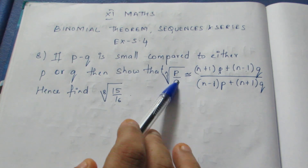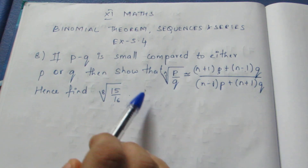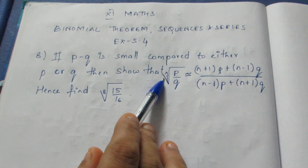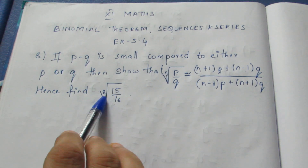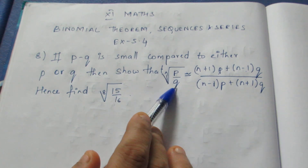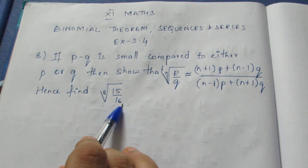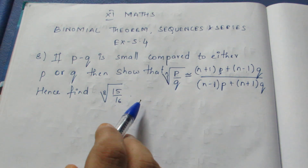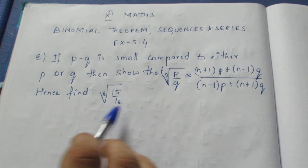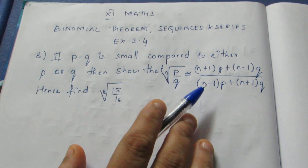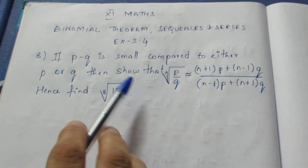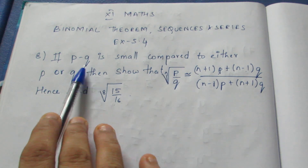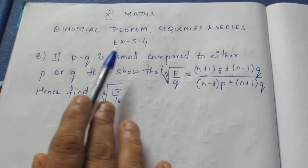First, we prove that LHS is equal to RHS. That is why we find the value using this formula. We note that n is equal to 8, p is equal to 15, q is equal to 16. We use the formula from the description. Since p minus q is small compared to p or q, it is a very small value. We will do this as an expansion.